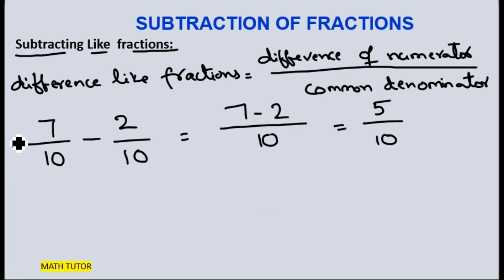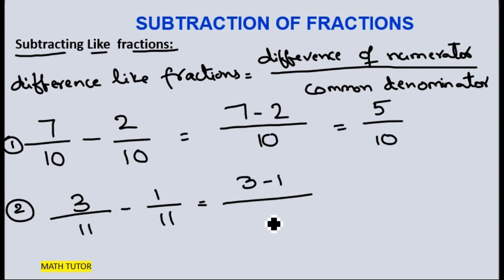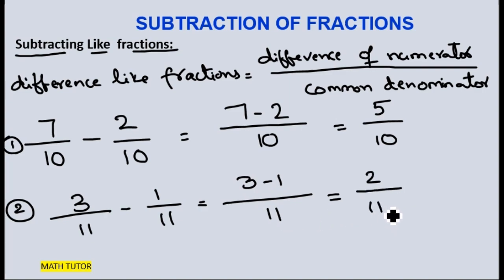Let us see one more example: 3 by 11 minus 1 by 11. Both are like fractions. I just need to separate the numerators and keep the common denominator. 3 minus 1 is 2, that is our new numerator. 11 is the denominator for both, so 2 by 11 will be the answer.